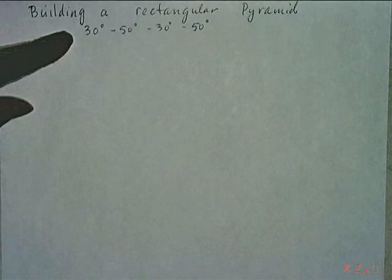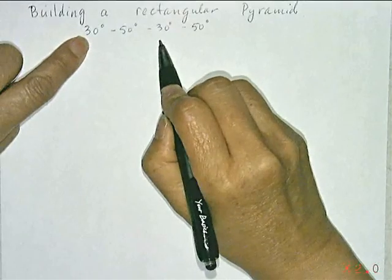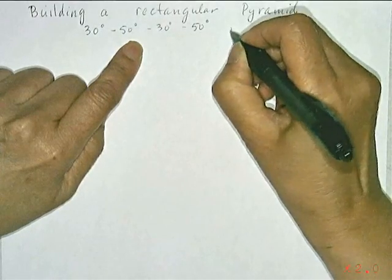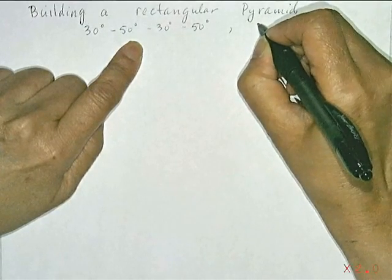There will be four angles that you'll be given. Two will be the same and the other two will be the same and they're alternating. You'll also be given a measurement such as 12 cm.